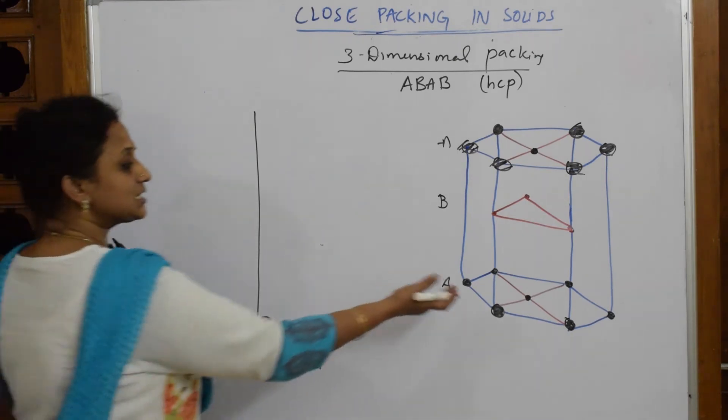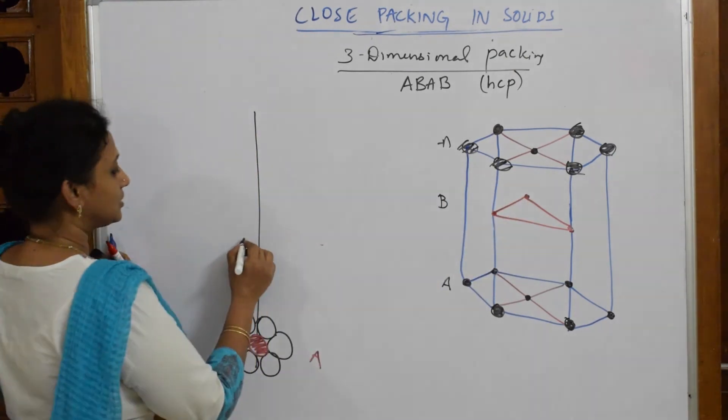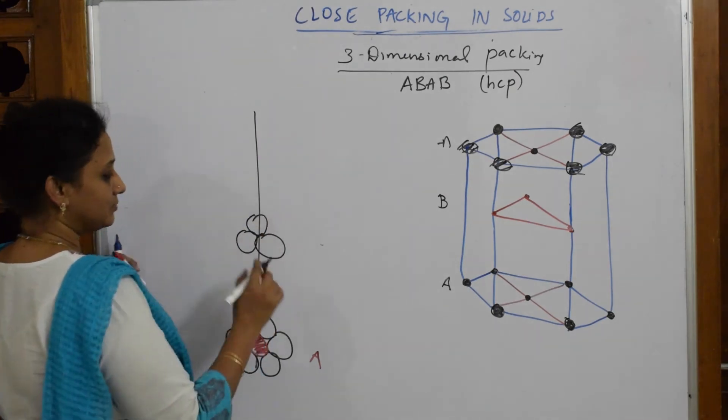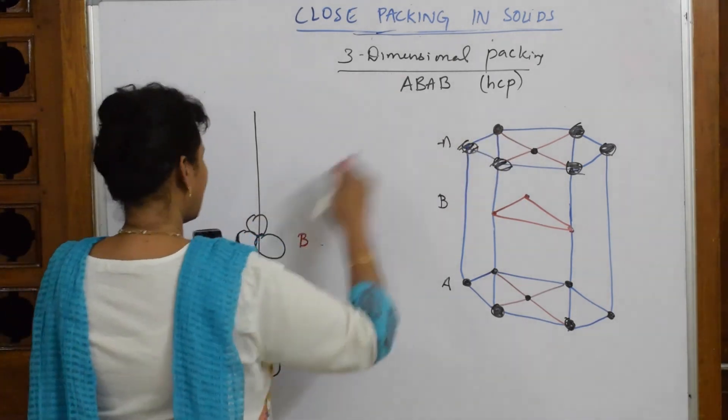Just above layer A, you have layer B. How many atoms do you have? One, two, three. So write those: just make one, two, and three. Label this as layer B.